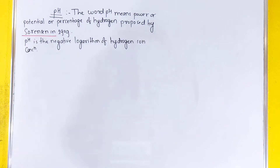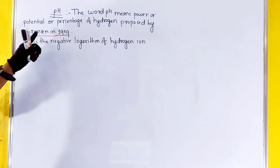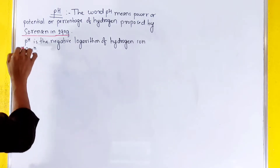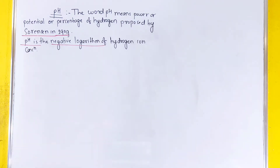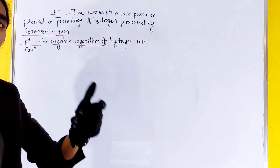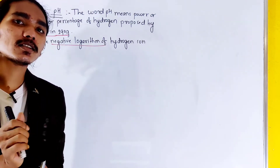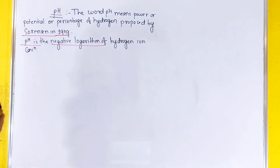In 1909, we define pH as the negative log of hydrogen ion concentration. We are also going to discuss the auto-ionization of water and the negative log of hydrogen ion concentration.